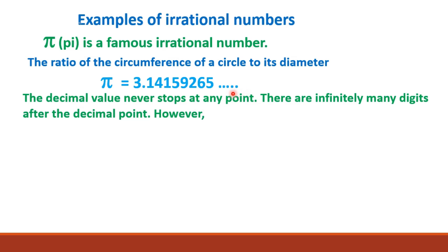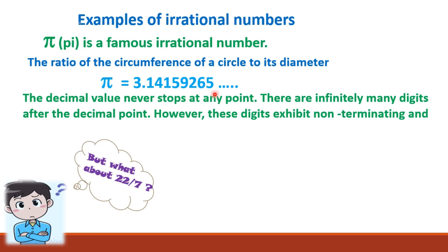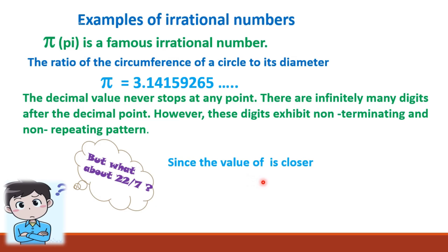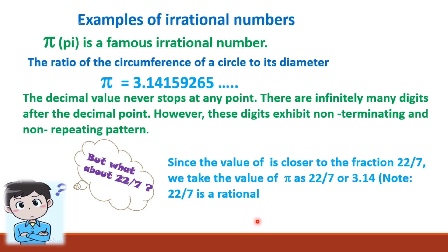These digits exhibit a non-terminating and non-repeating pattern. Since the value of pi is closer to the fraction 22 by 7, we take the value of pi as 22 by 7 or 3.14. Note: 22 by 7 is a rational number.